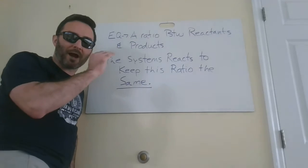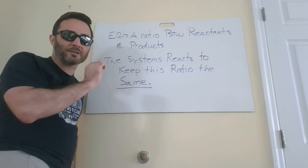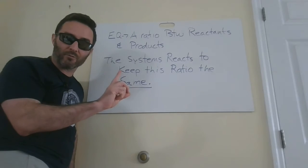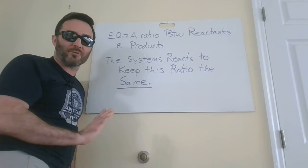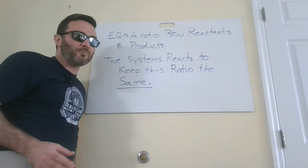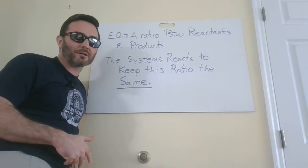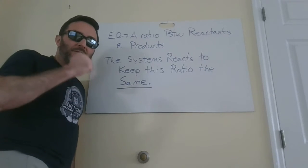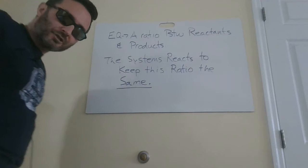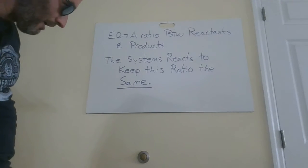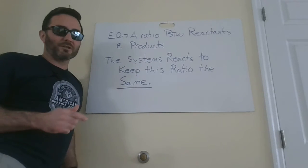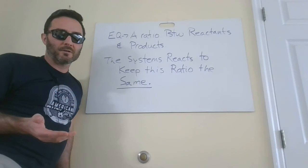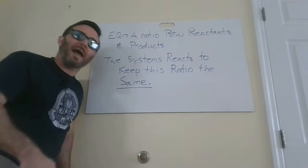Whatever that fraction of products and reactants is — it could be more products compared to reactants, more reactants compared to products, or a fraction that gives you a value of one — if you do something to disturb the system, like pulling reactants out or adding products, it doesn't matter. You're not changing the arrows when you disturb the system; you've done something to change one of the products, one of the reactants, or some other variable. The system is going to try to put that fraction back to the same number.